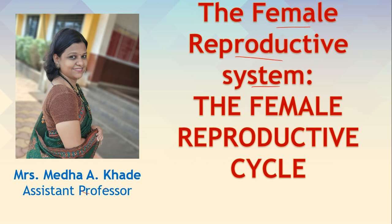In this particular video we shall consider the female reproductive cycle. As the name implies, these are some of the cyclic changes which are occurring in the female reproductive system. Usually there are two places where most of the alterations are taking place — that is in the ovaries and secondly the uterus. These are the two organs in which there are some sequential events which are taking place in a cyclic manner, and over a period of time all these events will repeat. That is why it is known as the female reproductive cycle.